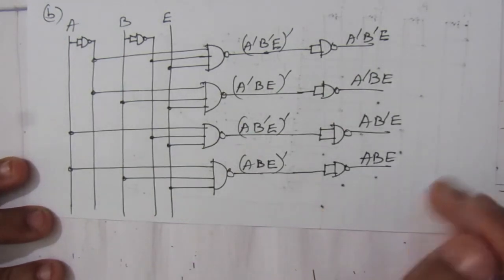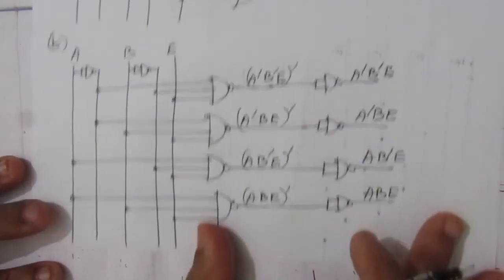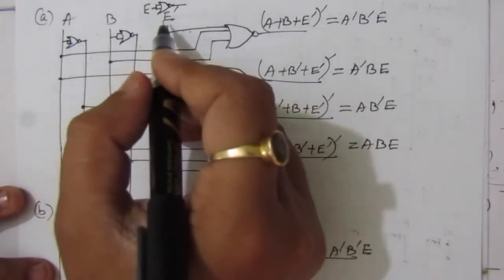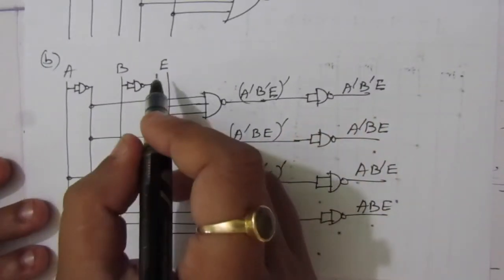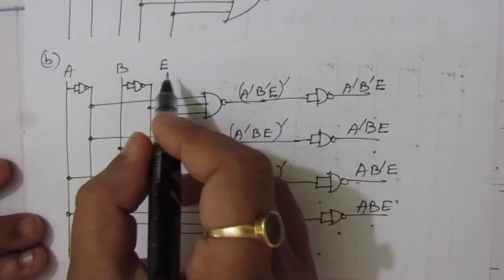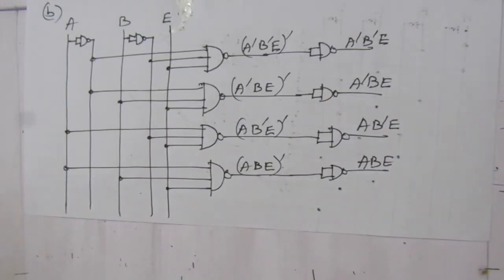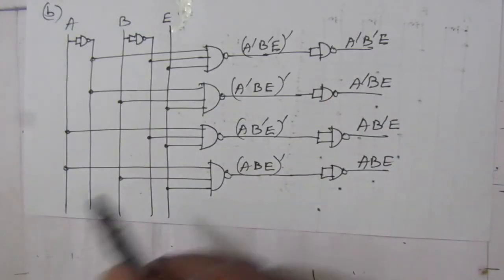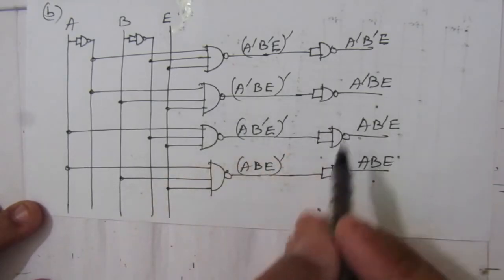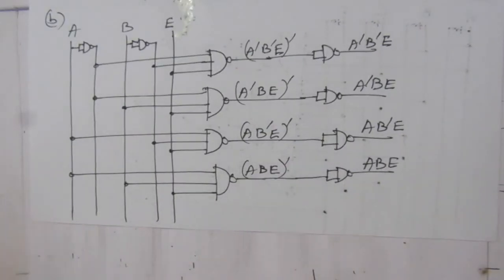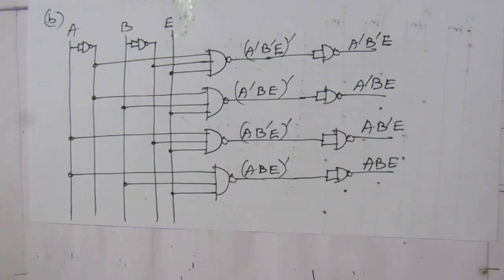The basic difference is that in the NOR gate design we used an inverted enable input Ē, whereas in the NAND gate design we used the enable input E directly. This is the logic circuit of a 2-to-4 line decoder using NAND gates only. Thank you for watching. If you have any questions, please put them in the comment section below. Please like, share, and subscribe to my channel.